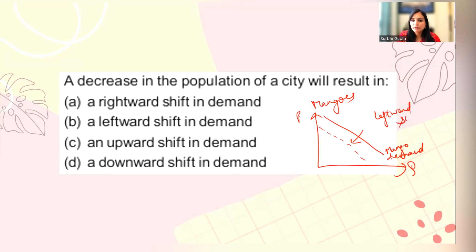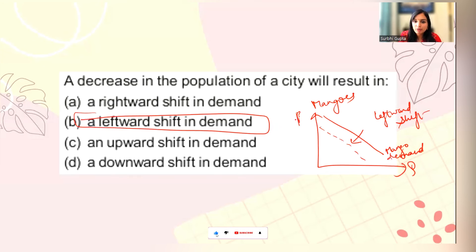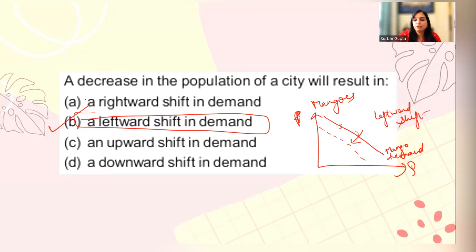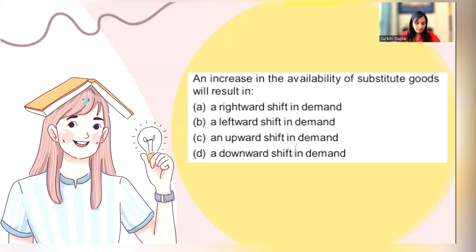So if there is a leftward shift, if price changes were low or high, then quantity demanded changes and there would be movement along the demand curve rather than a shift. So the correct answer is a leftward shift in the demand curve.